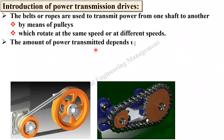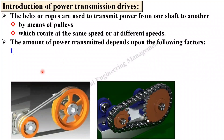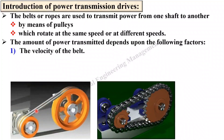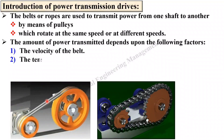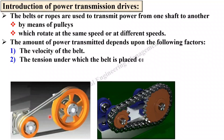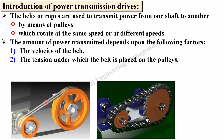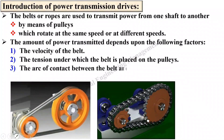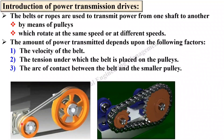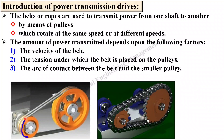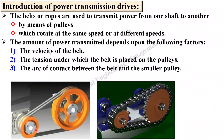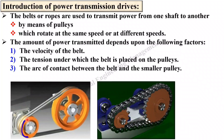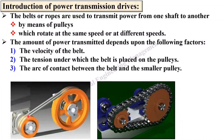The amount of power transmitted depends upon the following factors. First, the velocity of the belt — if you increase the velocity of the belt you can transmit more power. Second, the tension under which the belt is placed on the pulley. Third, the arc of contact, especially at the smaller pulley. Here you can see the belt contacts from one point to another — this is the contact angle of belt to pulley. If you increase the contact angle there is less chance of slip and so you can transmit more power.